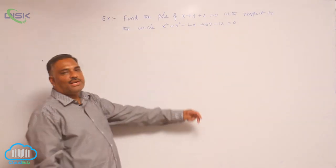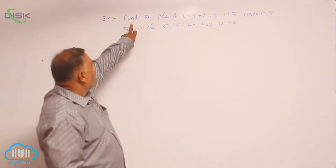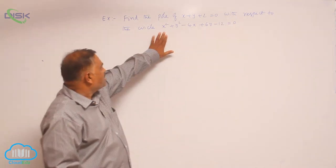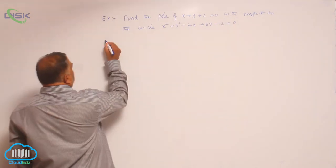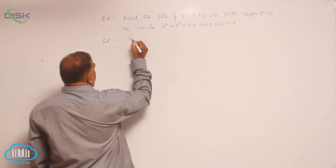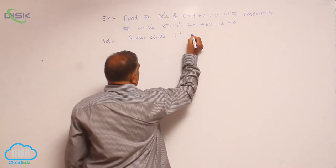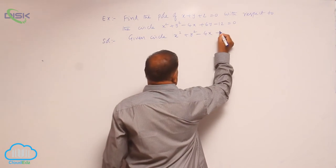We will discuss a problem related to pole. Find the pole of x + y + 2 = 0 with respect to the circle. Solution: given circle is x² + y² - 4x + 6y - 12 = 0.